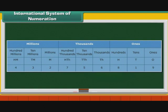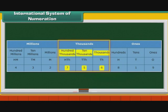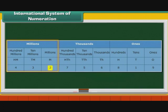The ones group has three digits: 9, 1, and 8. Each of these digits has a specific place — they are ones, tens, and hundreds. Similarly, the thousands group has three digits: six, five, and seven. Their places are thousands, ten thousands, and hundred thousands. The millions group has three digits: two, three, and four. Their places are millions, ten millions, and hundred millions.